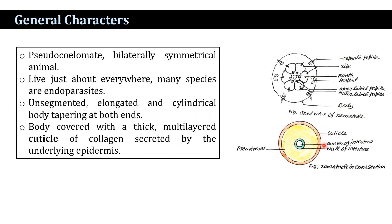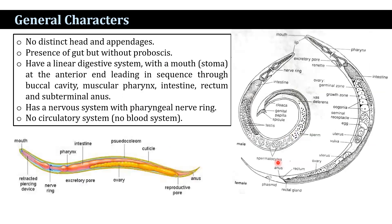You can see the cuticular lining. In the case of nematodes, there is no distinct head or appendages, but there is a presence of a gut with no proboscis. They have a large linear digestive system with a mouth at the anterior end, leading in sequence through the buccal cavity, then a muscular pharynx, then the intestine, and then the rectum.